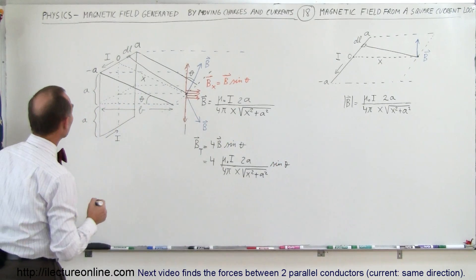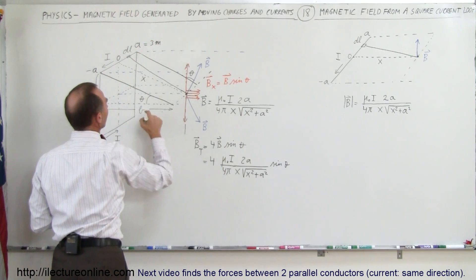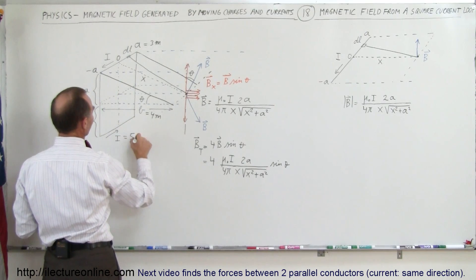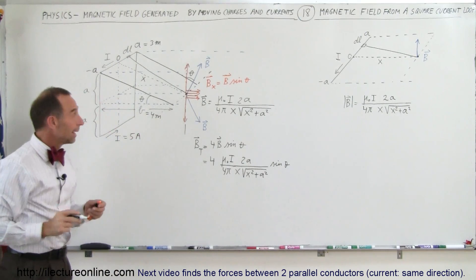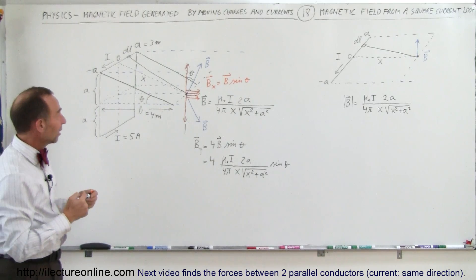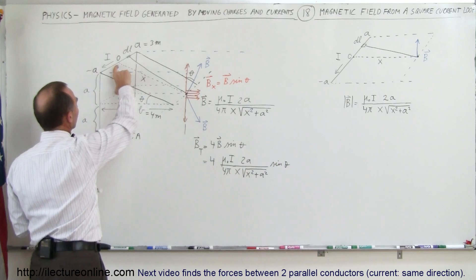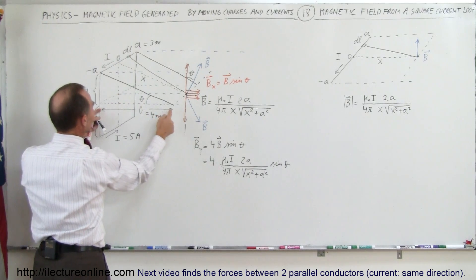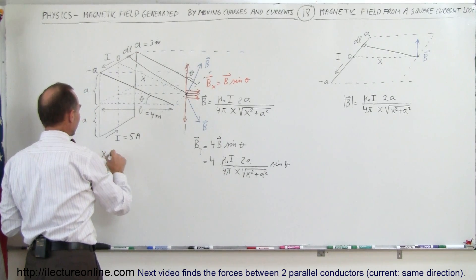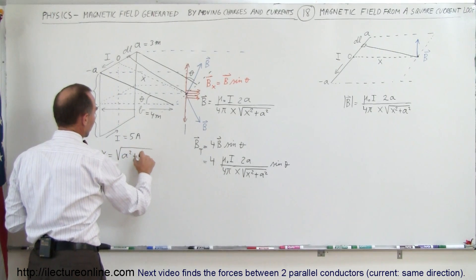Let's plug in some numbers to get a feel for the result. Let A = 3 meters, B = 4 meters, and current I = 5 amps. The slanted distance x is the square root of A² + B², which is the square root of 3² + 4² = square root of 9 + 16 = square root of 25 = 5 meters.